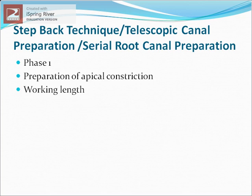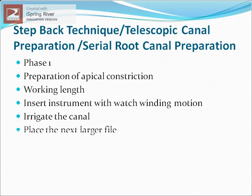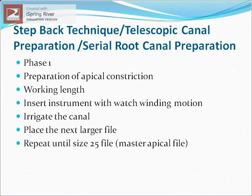In phase one, the first step is to establish the working length. Then insert the first instrument into the canal with a watch-winding motion to full working length, remove the instrument, and irrigate the canal. Place the next larger-size file to the working length in a similar manner and irrigate. Repeat this process until size 25, considered the master apical file, is reached, then recapitulate the canal.